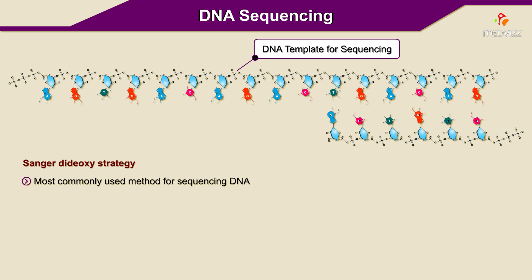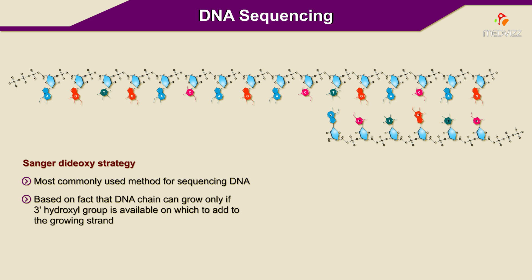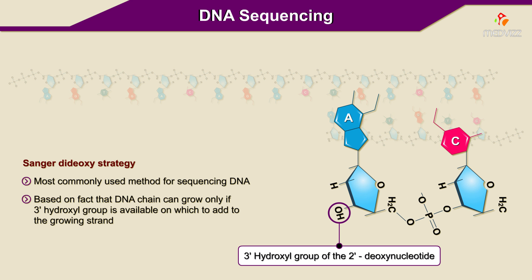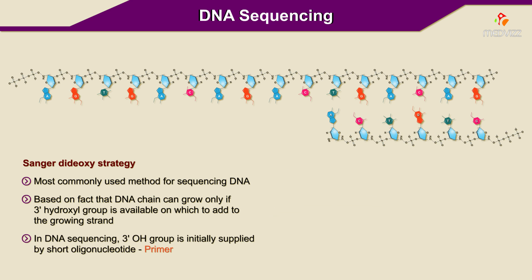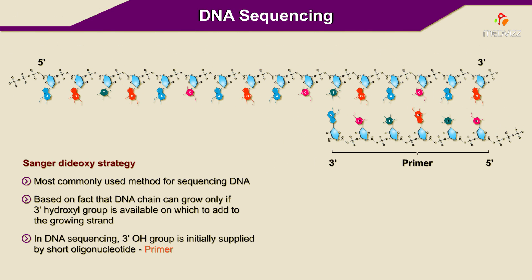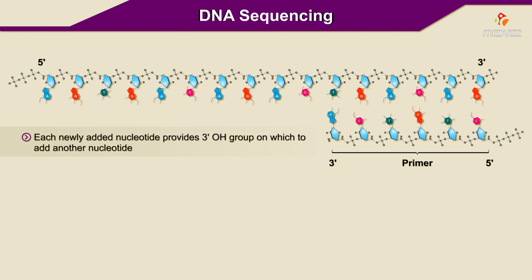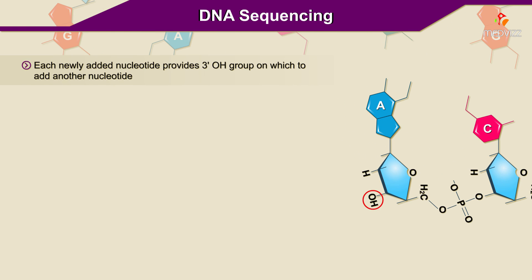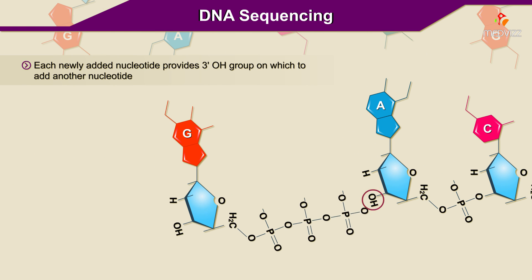The most commonly used method for sequencing DNA relies on the Sanger dideoxy strategy. Ingenious in its simplicity, the dideoxy method is based on the fact that a DNA chain can grow only if a three prime hydroxyl group is available on which to add to the growing strand. In DNA sequencing, the three prime OH group is initially supplied by a short oligonucleotide called a primer. Each newly added nucleotide provides a three prime OH group on which to add another nucleotide.